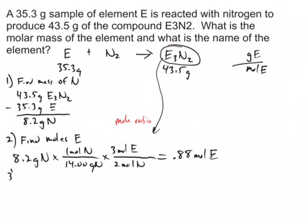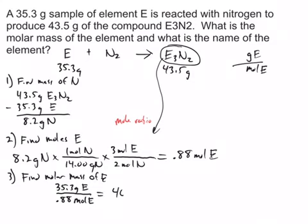Okay, my third step now is to find molar mass of E, which is what this problem is all about. So I'm going to take my original 35.3 grams of E, that was what was given, and I'm going to divide by the moles that I just came up with, 0.88 moles of E. When we divide, we get 40.1 grams per mole.